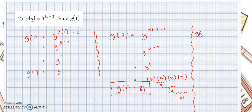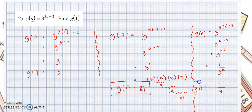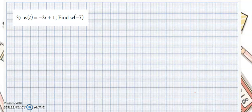One last example for this function: g of 0. We substitute 0: 3 raised to 3 times 0 minus 2, equals 3 raised to 0 minus 2, which is 3 raised to negative 2. If you have a negative exponent, get the reciprocal to make it positive. So this equals 1 over 3 raised to 2. Evaluating 3 squared gives 9, so g of 0 equals 1 over 9.